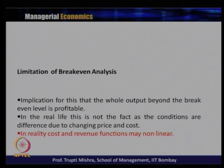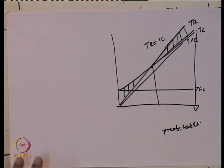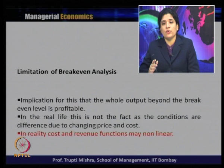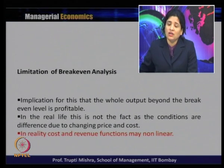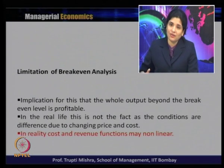In real life, however, conditions differ due to changing prices and costs, so the cost and revenue functions may not be linear. The non-linearity arises because average variable cost and price vary with changes in output. As a result, total cost may increase at an increasing rate while total revenue increases at a decreasing rate, leading to stages where total cost exceeds total revenue again.